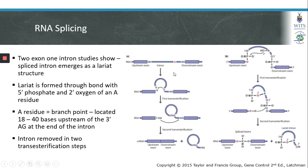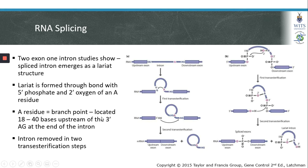Studies involving two exons and one intron have shown how an intron can be removed during splicing. The intron emerges from between the two exons in a structure called a lariat. This lariat involves the formation of a bond between the 5' phosphate at the G residue with the 2' oxygen of an A residue. This A residue is called the branch point and it is located 18 to 40 bases upstream of the 3' AG at the end of the intron.